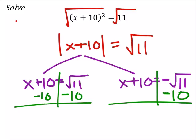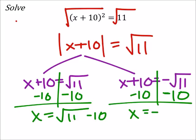And so on this side, I've got x equals the square root of 11 minus 10. And on this one, x equals the negative square root of 11 minus 10.